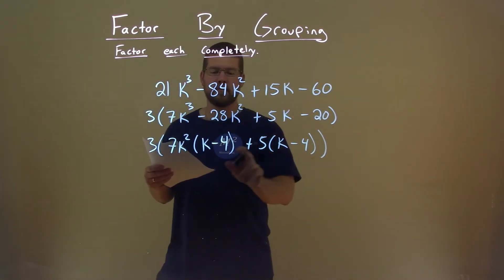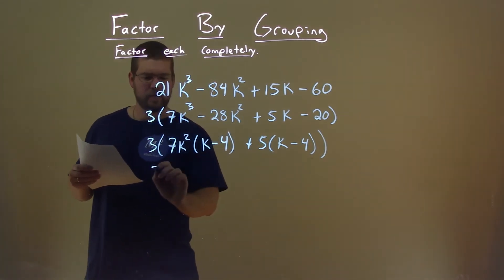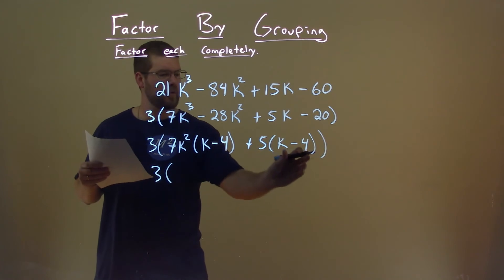Now notice the k - 4 is written twice. So if we pull that out here, so 3 stays here, we pull out that k - 4 from both parts,